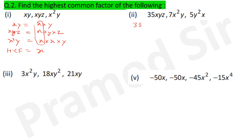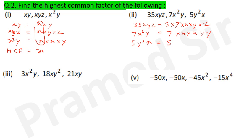Question 2 part 2: 35xyz = 5×7×x×y×z, 7x²y = 7×x×x and y, 5y²x = 5×y×y and x one time. What is matching here: only x. So HCF = x.